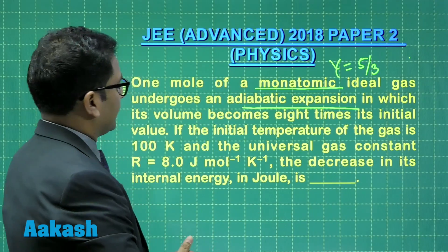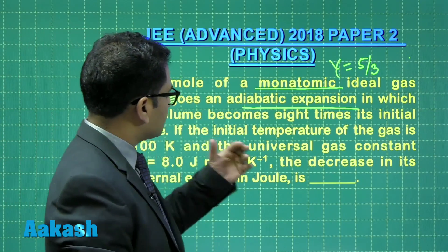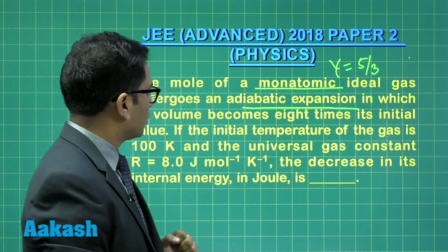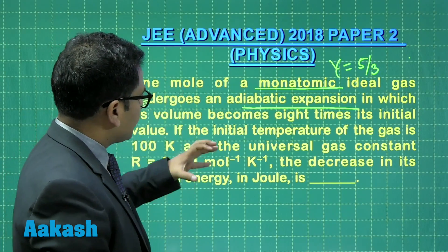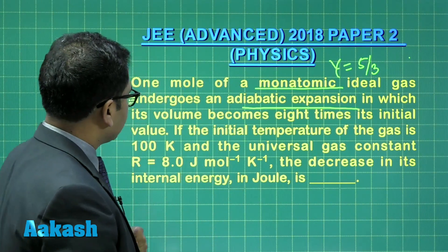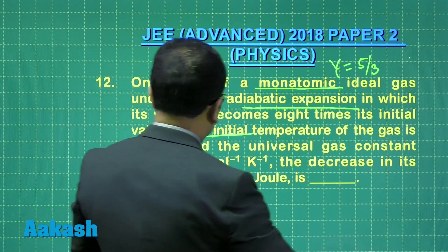So quite obviously, the temperature has to fall. And by how many times will it fall? For that, you have the data here. The volume becomes 8 times. And from this particular data, we need to find the decrease in internal energy. And the initial temperature has been given as 100 Kelvin.